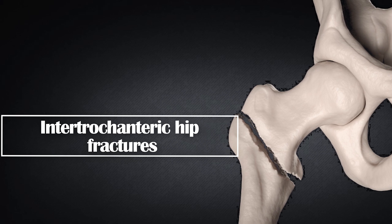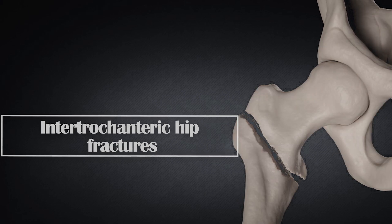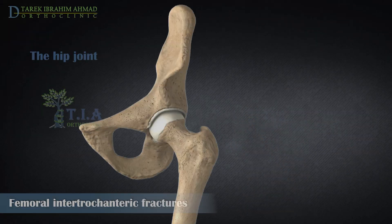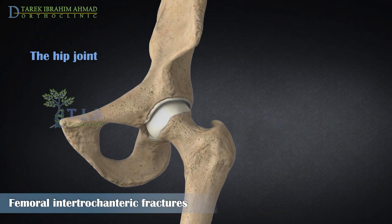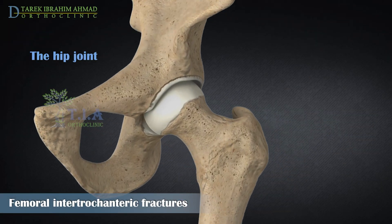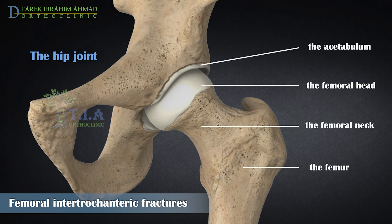Intertrochanteric Hip Fractures. The hip joint is a ball and socket joint consisting of the acetabulum and the femoral head. The femoral neck connects the femoral head to the proximal portion of the femoral shaft and attaches to the intertrochanteric region.